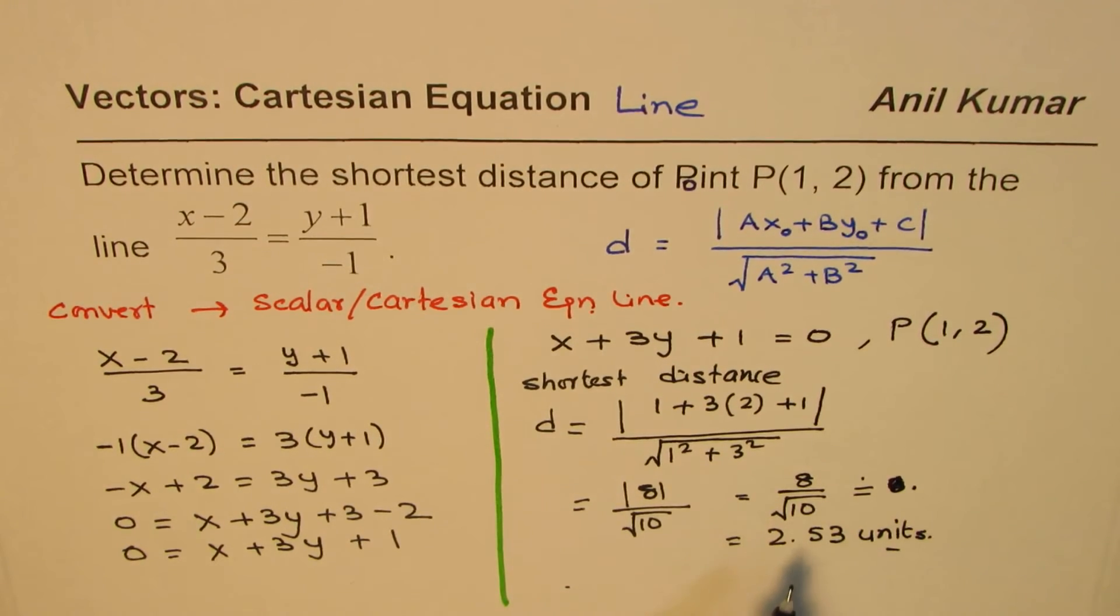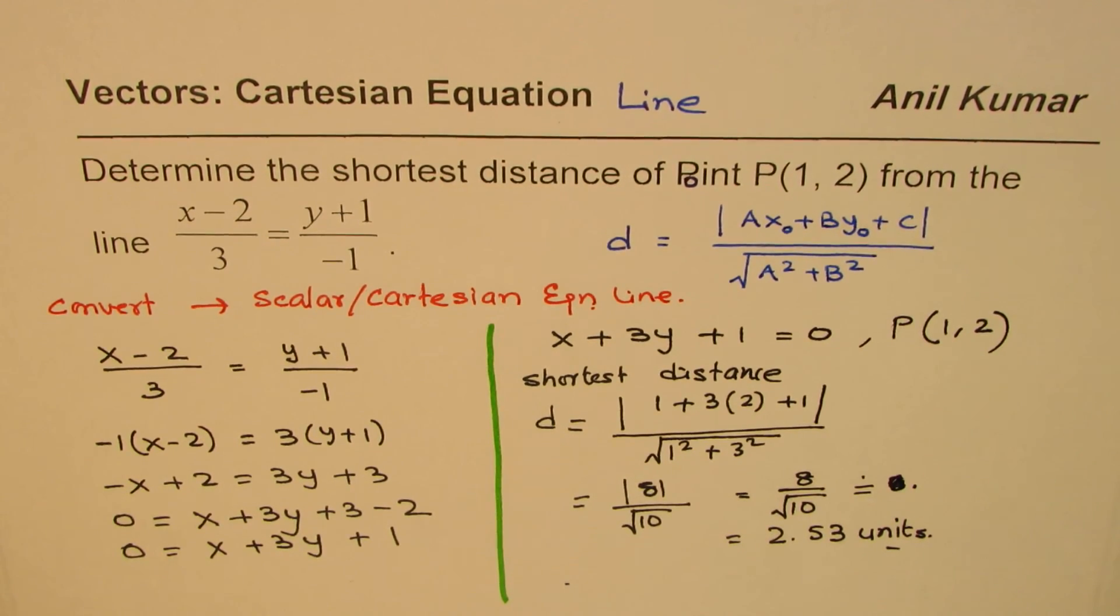So let's once again understand the strategy. Strategy here for shortest distance is to convert the equation of the line into Cartesian equation, then apply the formula and find the answer. That's the best way. I'm Anil Kumar and I hope you understand and appreciate the strategy. Thank you and all the best.